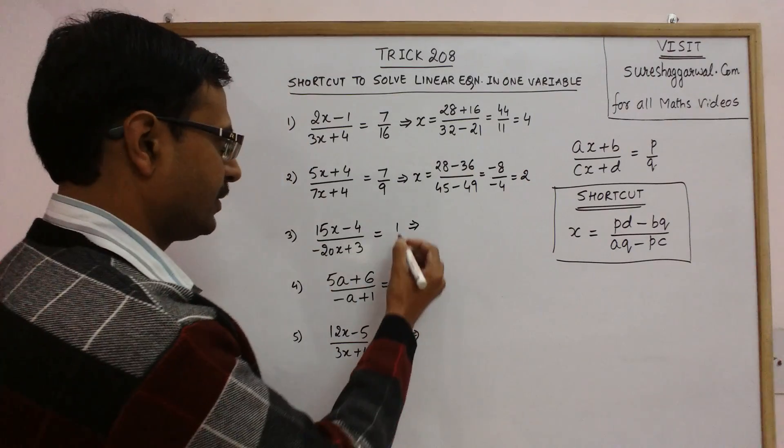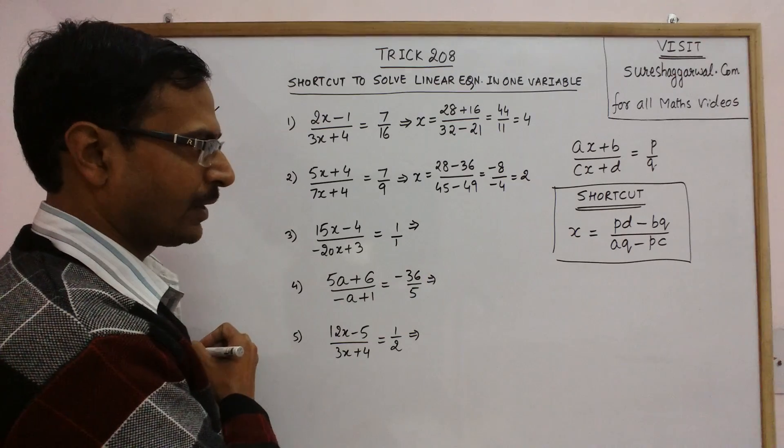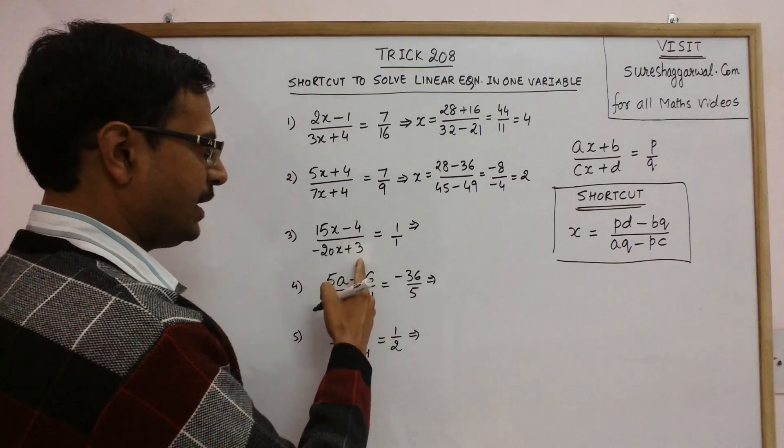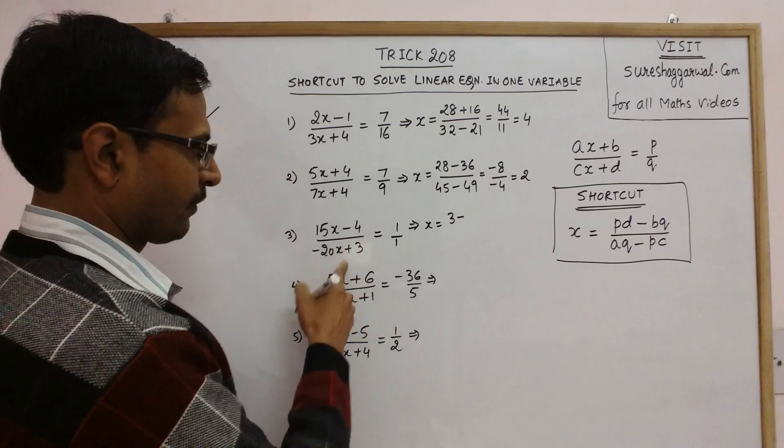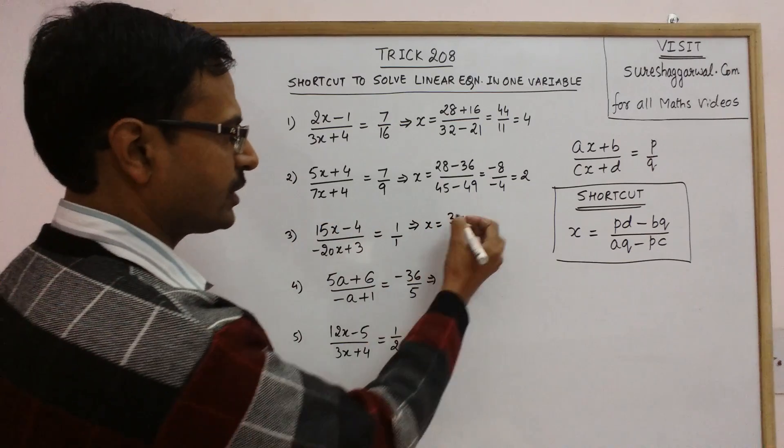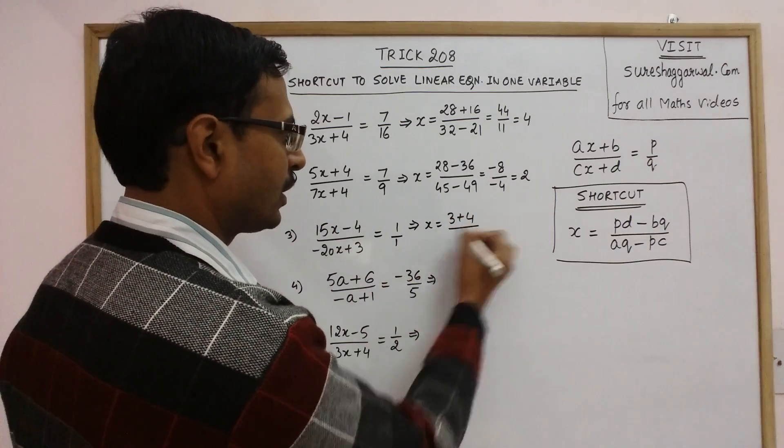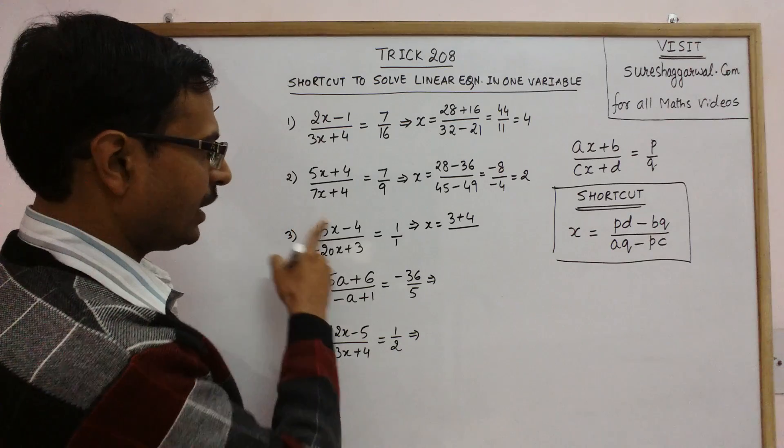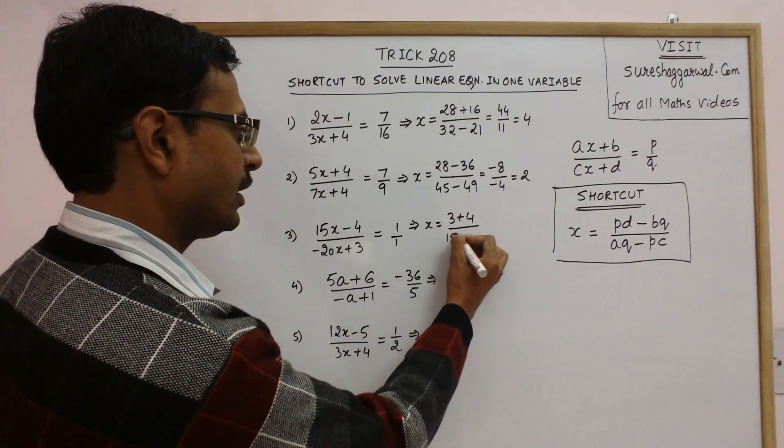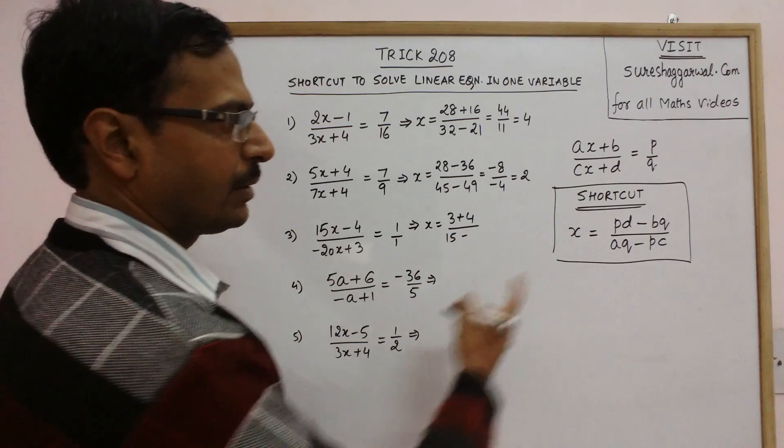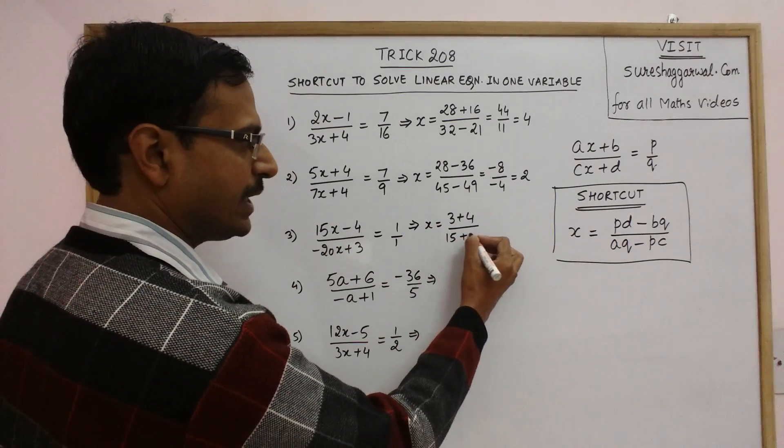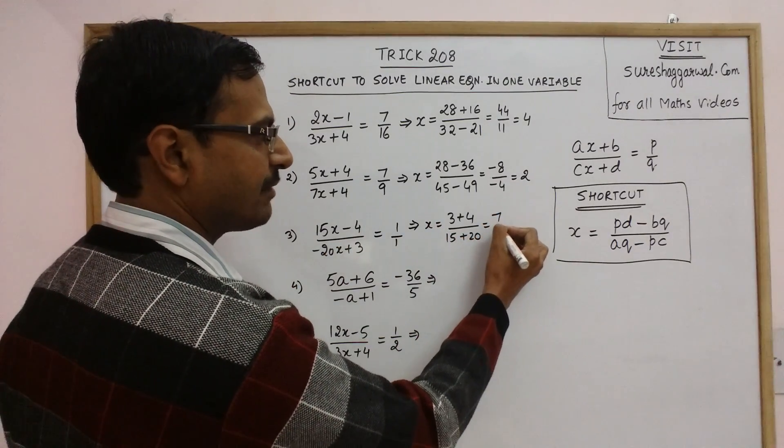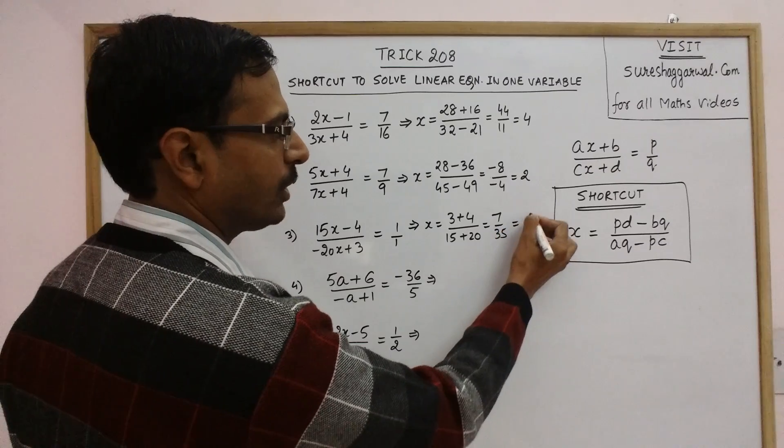Apply it here. So this is 1 upon 1. Now pd 3 minus, so this is minus 4 now, so this becomes plus 4 upon aq 15 minus pc, so minus 20, so this becomes plus 20. So your answer is 7 upon 35 which is 1 upon 5.